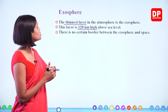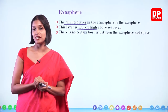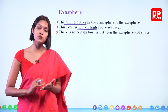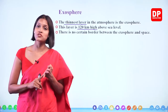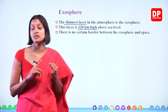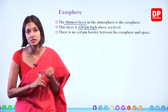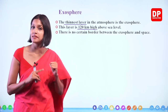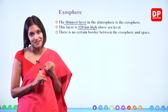So now we know there are five layers of the atmosphere starting from the earth: number one, troposphere; number two, stratosphere; number three, mesosphere; number four, thermosphere; and the last layer is known as the exosphere.